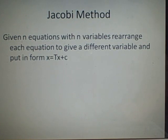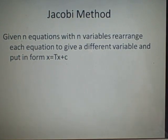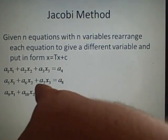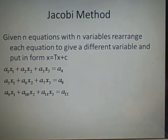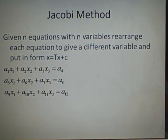If you've got an equation with n variables, you have to rearrange each equation to give a different variable. This can then be put in the form x equals Tx plus c, where x is a column matrix and c is another column matrix. So if we're given equations with variables x1, x2, x3 and constants a1, a2, a3 and so on, we rearrange each equation to give a different variable. It's essential that if you've got three variables x1, x2, x3, you must have three different equations.